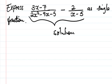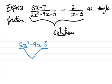So what we're going to do is factorize the denominator. We should factorize 2x squared minus 9x minus 5 as a single fraction.